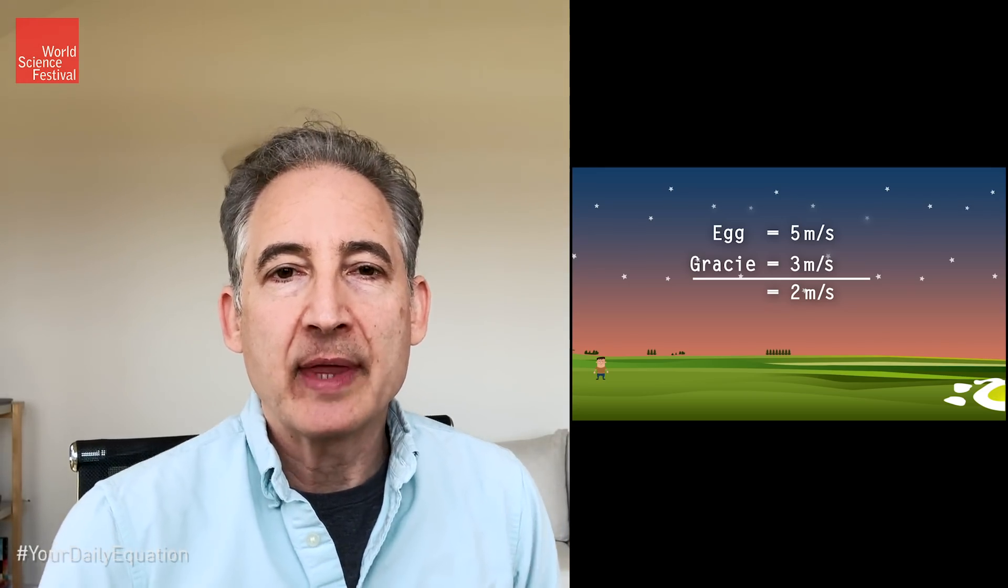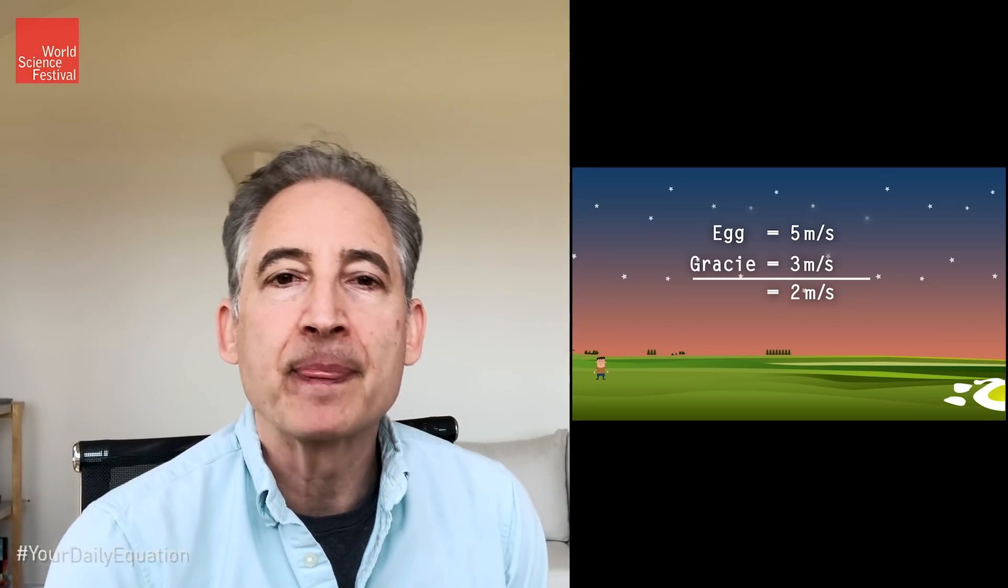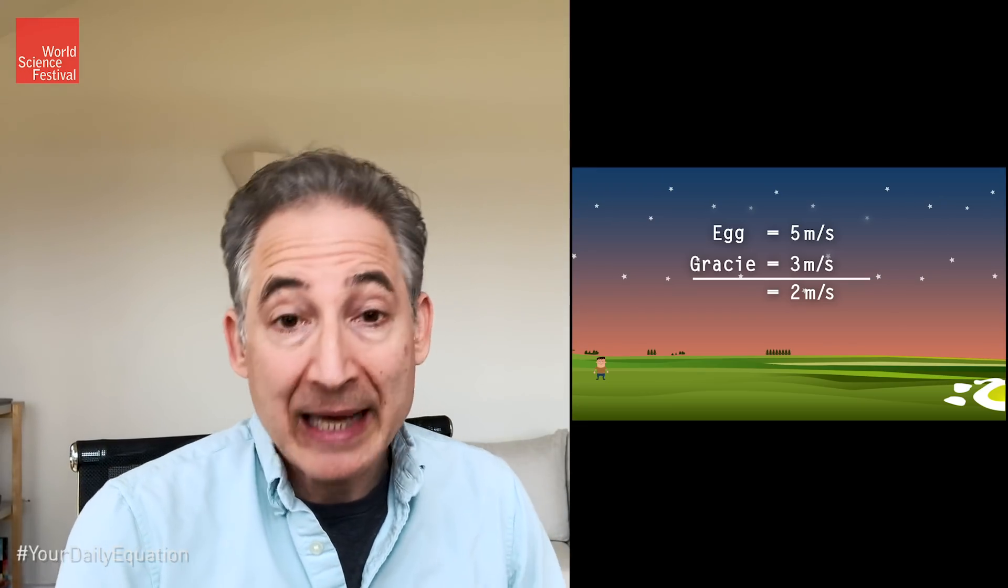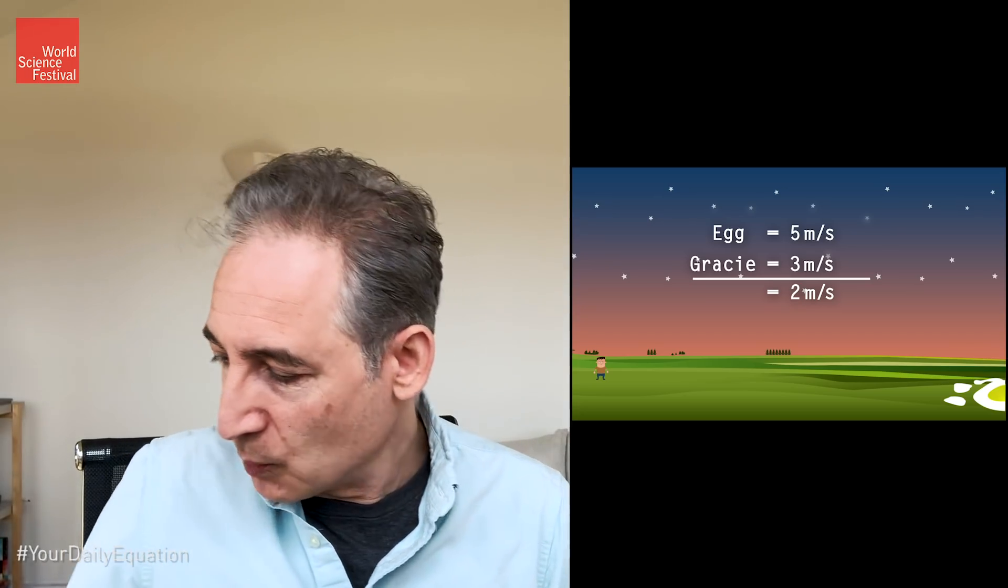And in the reverse situation too, if Gracie loved playing catch with eggs and couldn't resist the wait for the egg to reach her, and she ran toward George at the same speed, 3 meters per second, then we all have in our intuition that the egg would approach her at 5 plus 3 meters per second or 8 meters per second. And the tension comes in when we think about these ideas applied to the speed of light.